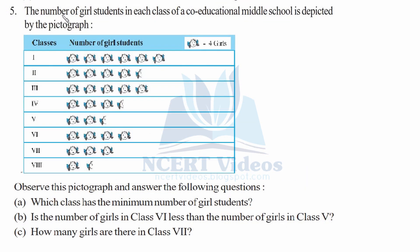Question 5: The number of girl students in each class of a co-educational middle school is shown by a pictograph. The key here is that one picture represents 4 girls. Keep this in mind while answering the questions.